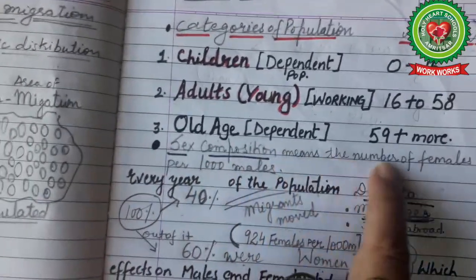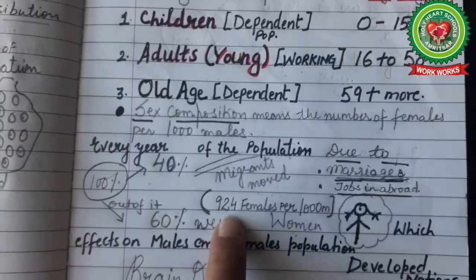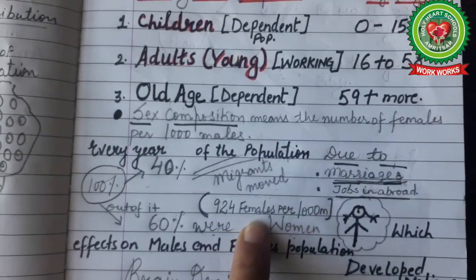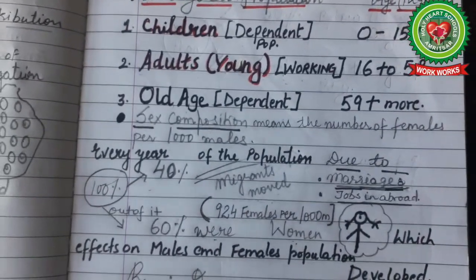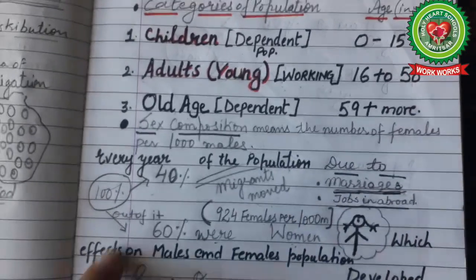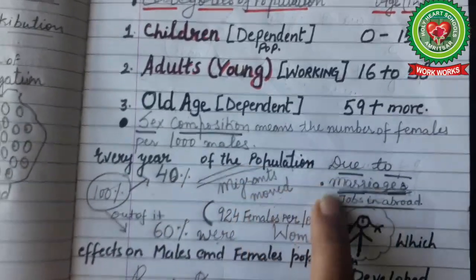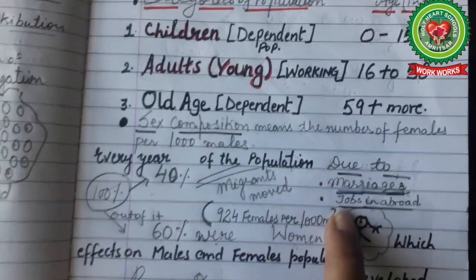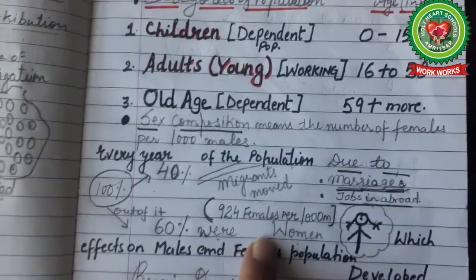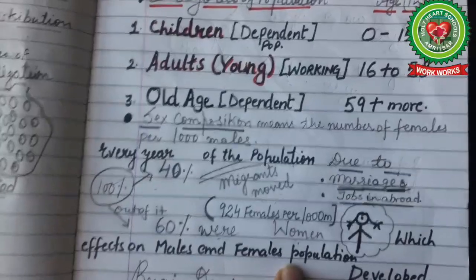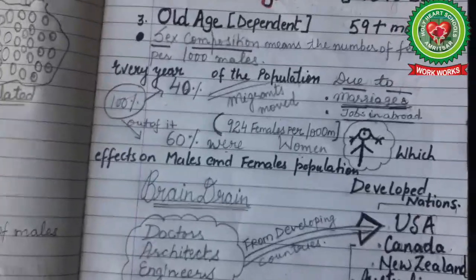Sex composition means the number of females per 1000 males. According to the new data, there are 924 females per 1000 males, which shows that there are fewer women per 1000 men. Every year, 40% of the population moves due to marriage and jobs abroad, and out of this 40%, 60% were women, which affects the male and female population — somewhere it is more and somewhere it is very less.